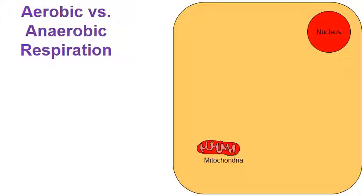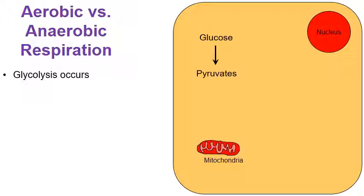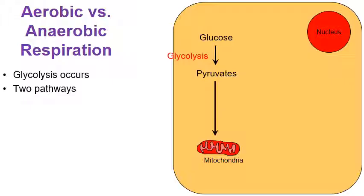Before we discuss fermentation, we need to talk about what glycolysis is. Glycolysis is a chemical reaction where a molecule of glucose is broken down into a couple molecules called pyruvate — that is a very short symbolic diagram of what happens during glycolysis. What about those pyruvates that are left over? Well, there are two pathways that will happen next: one is an aerobic pathway and one is an anaerobic pathway. Let's follow the aerobic pathway first.